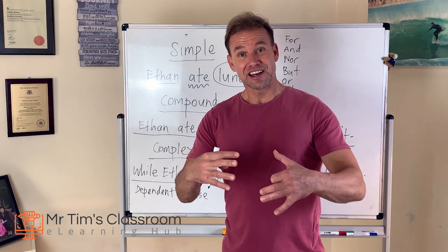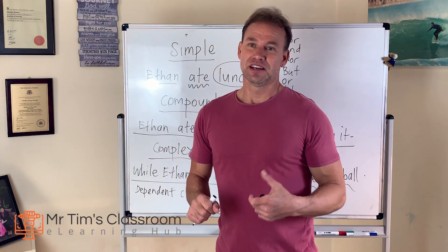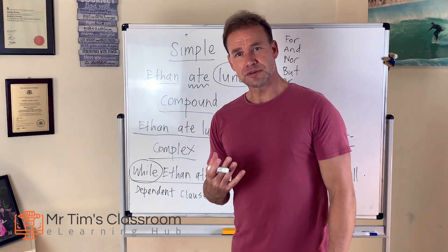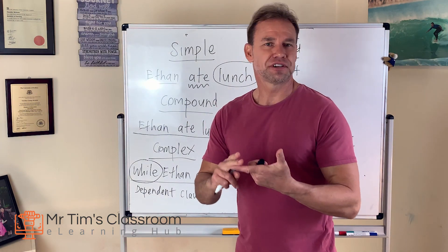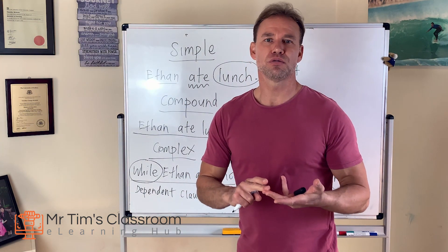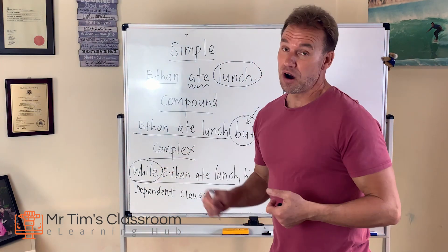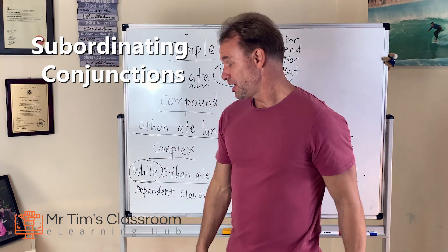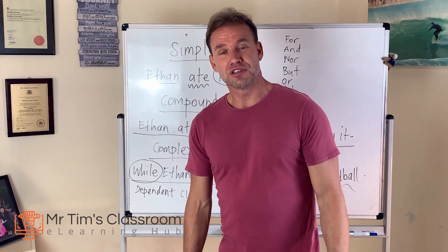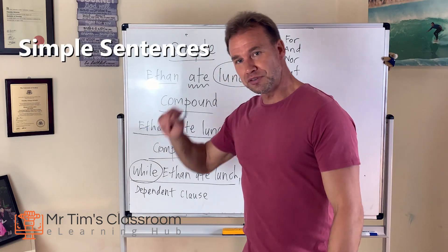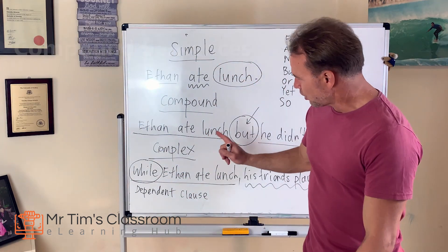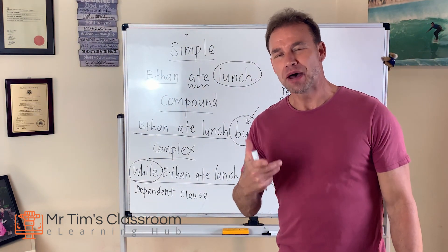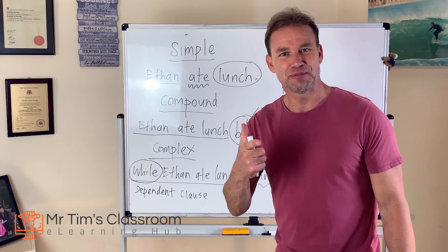There are lots of other words like 'while' that you can use for complex sentences — words like 'when', 'after', 'before', 'although', 'unless', and 'while'. These are all called subordinating conjunctions, if you really want to know. So there you have it, boys and girls. Today we've covered the three main types of sentences: simple sentences, compound sentences, and complex sentences. I hope that helps. I'll see you back in Mr. Tim's classroom next time. Take care, boys and girls. Bye!